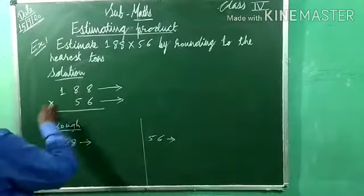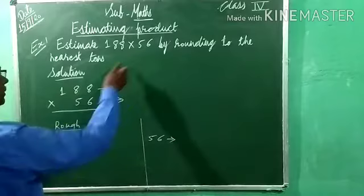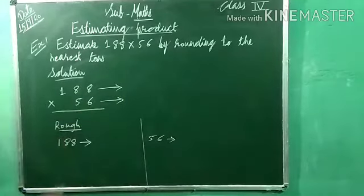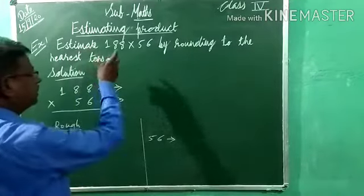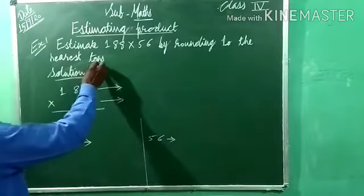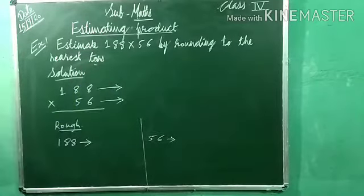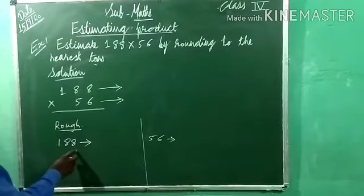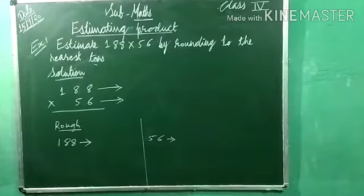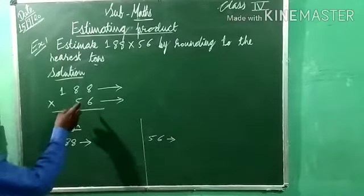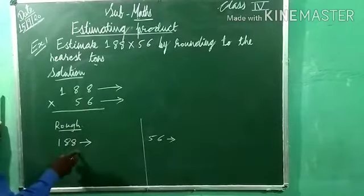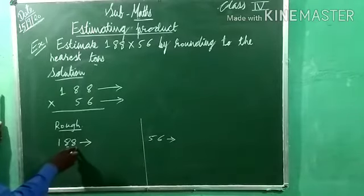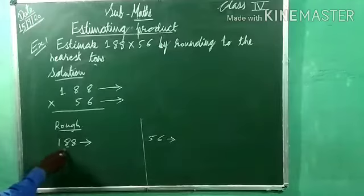So 188 multiplied by 56 we have to find, but by estimating. First you have to estimate and then solve. By rounding to the nearest 10, write this number 188 as it is. After rounding to the nearest 10s, look at the place value of 10s here — ones, tens — so it is 8. Underline 8. In place of this 8 we have to place 0, and the digits 1 and 8, this two-digit number 18, stays as is.